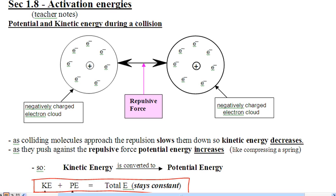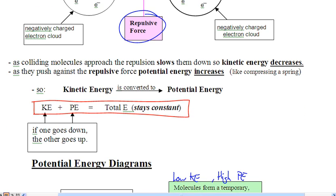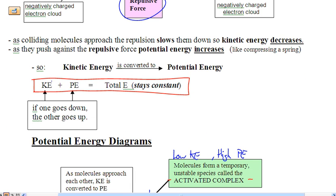If you put two negatives together they're going to start to repel each other. There's a repulsive force keeping molecules away from each other. When they approach each other, that force is going to build and build — that is potential energy. We convert kinetic energy into potential energy and back into kinetic as molecules move close to each other and then away. The total energy of the system is constant: kinetic energy plus potential energy equals total energy.